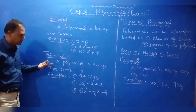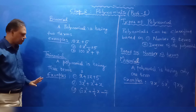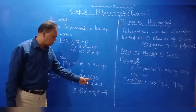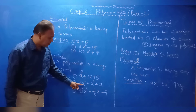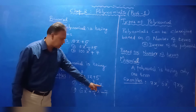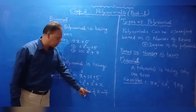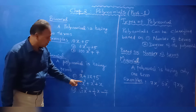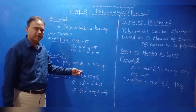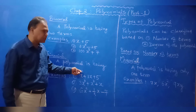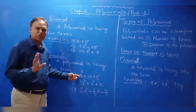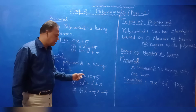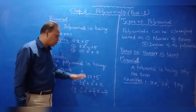A trinomial has three terms. For example, x squared plus 3x plus 5 has three terms. Another example is 3x squared plus x plus x — three terms. And root 2 times x squared plus 1/5 x minus 7 is also a trinomial. The powers in a polynomial must all be whole numbers. If we have x power minus 2 or root x (which is x power 1/2), that is not a polynomial.